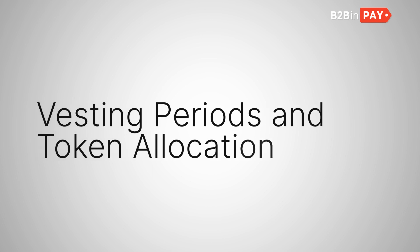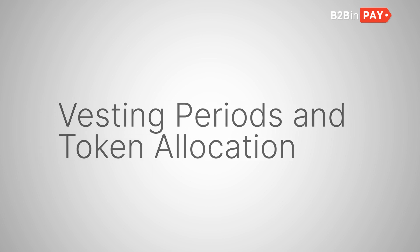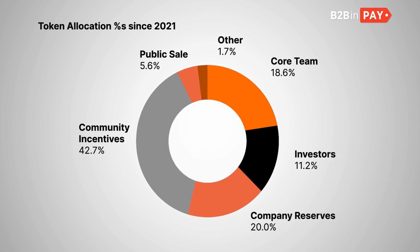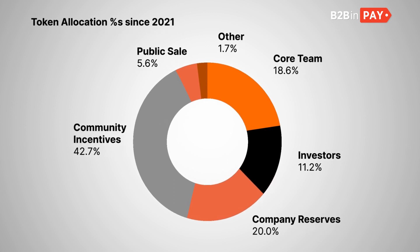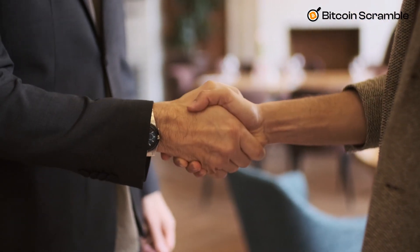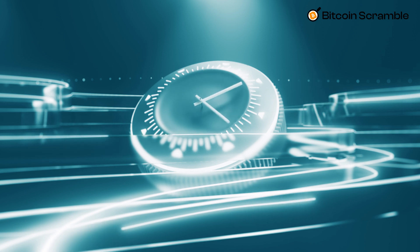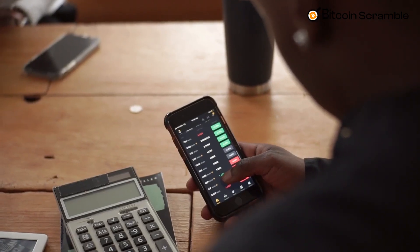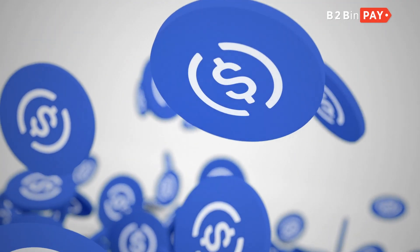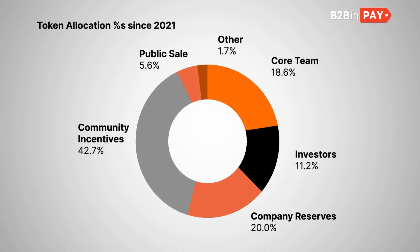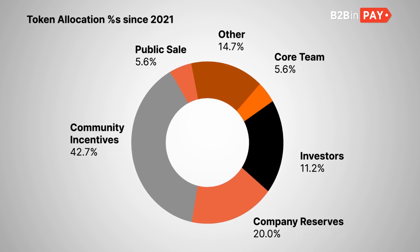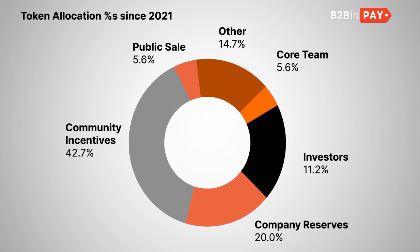Number 4: Vesting Periods and Token Allocation. Certain crypto projects allocate tokens in a detailed manner. It is often the case that a certain number of tokens are reserved for venture capitalists or developers, but they cannot sell these tokens until a certain amount of time has passed. Over time, this naturally has an impact on the number of coins in circulation. Ideally, we need a system where tokens are allocated to minimise the impact of issuance and the rate at which tokens are unlocked on the supply and price of tokens.